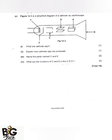The next question refers to figure 12.3, a simplified diagram of a cathode ray oscilloscope. Part F is called the filament. The function of the filament is to heat up part E. Part E is called the cathode, which is negatively charged.